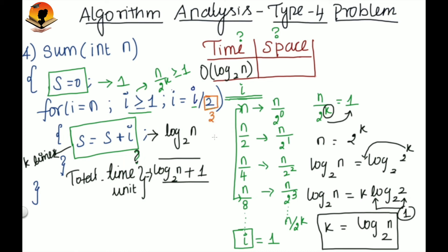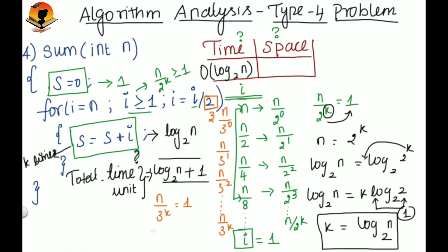Suppose instead of 2 you have some other constant value — for example, if it is 3 — then this pattern will become n / 3^0, n / 3^1, n / 3^2, and so on, n / 3^k equals 1. If you apply the same logic here, then you will get k as log n base 3. So whatever value you are using as the divisor, that will become the base for the logarithm.